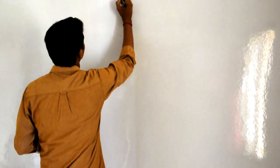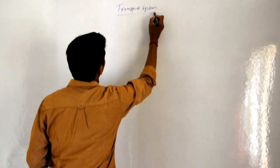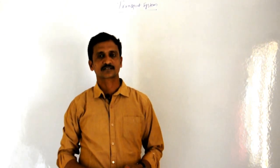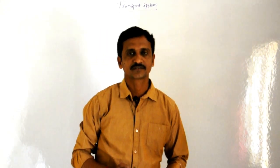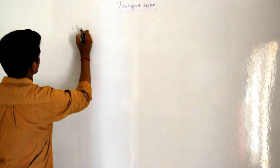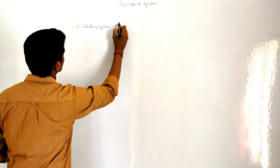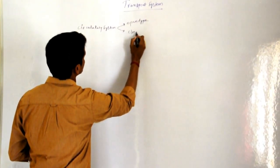Hi everyone. Today we are going to discuss about the transport system. In this topic we are going to discuss complete details of blood structure and working mechanism of heart and blood vessels. During the course of evolution, organisms developed two types of circulatory systems: open type and closed type of circulatory system.